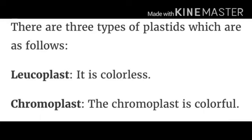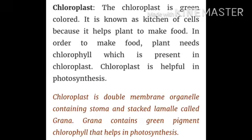There are three types of plastids: leucoplast, which is colorless; chromoplast, which is colorful; and chloroplast, which is green colored. Chloroplast is known as the kitchen of the cell because it helps plants make food. Plants need chlorophyll to make food, which is present in chloroplast. Chloroplast is helpful in photosynthesis. It is a double membrane organelle containing stroma and stacked membranes called grana, which contain the green pigment chlorophyll that helps in photosynthesis.